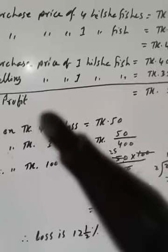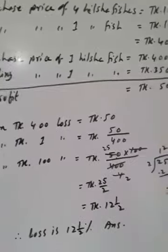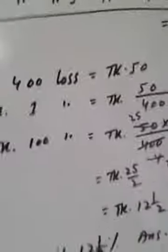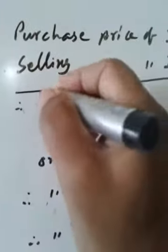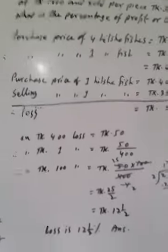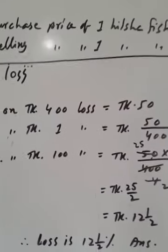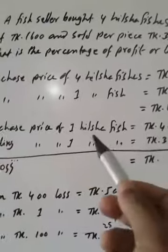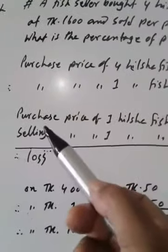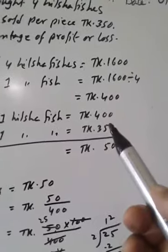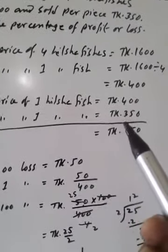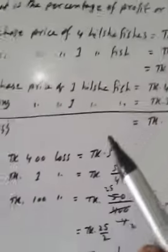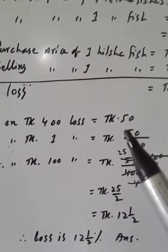Loss per fish, 50 Taka. On Taka 400, we have to calculate profit or loss on the cost price. Here purchase price is 400 Taka. Purchase price means cost price. Cost price 400 Taka, and selling price 350 Taka. We have to calculate profit or loss on cost price. So on Taka 400, loss is Taka 50.